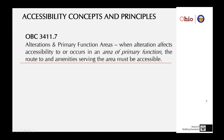Section 3411.7 talks about alterations to primary function areas and makes a pretty blatant statement: if I'm altering a primary function, then I've got to get to that primary function and make the amenities serving that area accessible. Things like toilet rooms and drinking fountains along the way to the primary function area that's being altered have to be made accessible. This is a very important provision for existing buildings and acknowledges the need to add some exceptions.